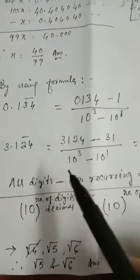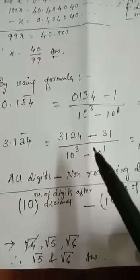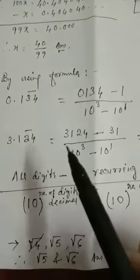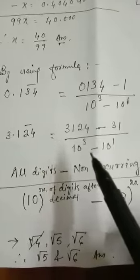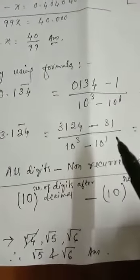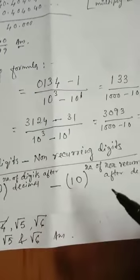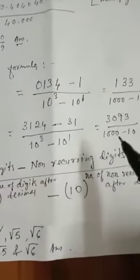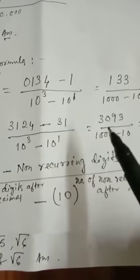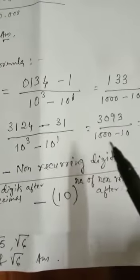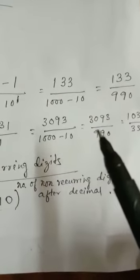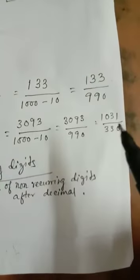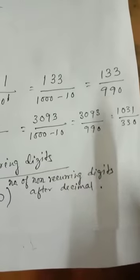Decimal you avoid, divide by 10 to the power 3. Why? Because the number of digits after decimal you have is 3 digits — 1, 2, 4 — so write 3 here, minus 10 to the power 1. Why? Because the formula tells the number of non-recurring digits after decimal, and here only 1 digit, so 10 to the power 1. Now solve it: you get 3093 divided by 1000 minus 10, is equal to 3093 divided by 990. Reduce it again, you get 1031 divided by 330. That is your last answer.